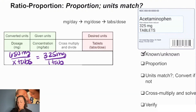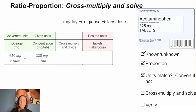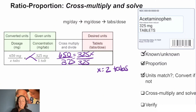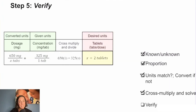Now we can verify again that our units all match, and they do. So we can do our cross multiplication. When we cross multiply, we get 650 equals 325X. We divide by 325 to get X alone, and we get X equals two tabs. We do our verification the same as we would with dimensional analysis — checking that the number plugs in and that we've rounded properly — and we see that's correct.